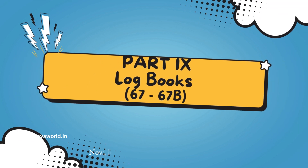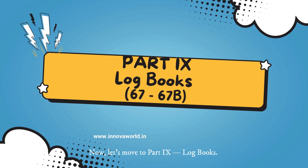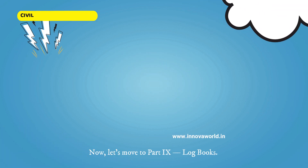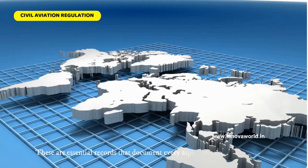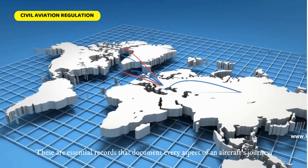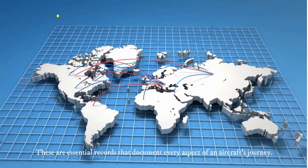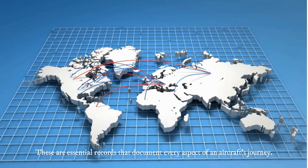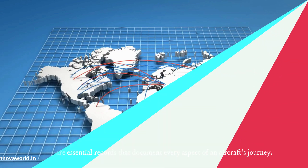Now let's move to Part 9: logbooks. These are essential records that document every aspect of an aircraft's journey.